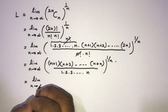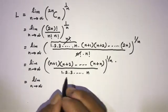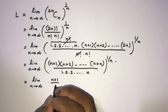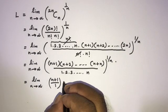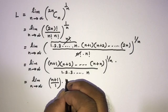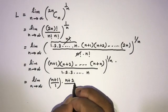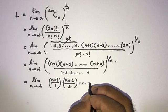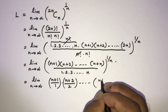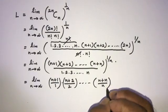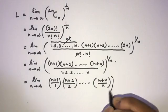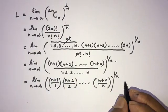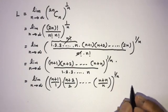Taking the limit as n approaches infinity, we can now write this as n plus 1 over 1, times n plus 2 over 2, with the last term being n plus n over n, all to the 1 over n power.